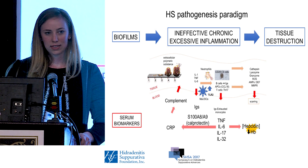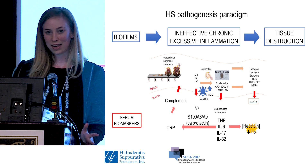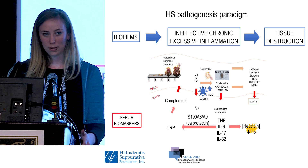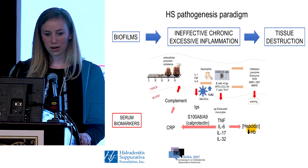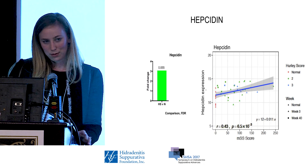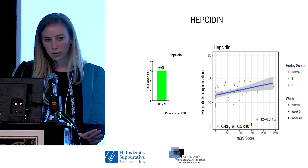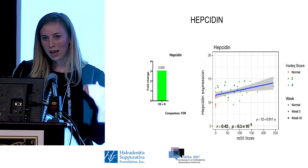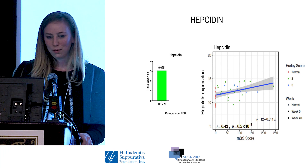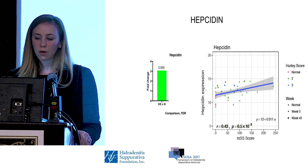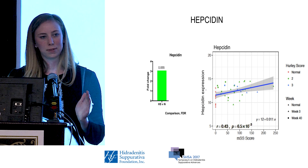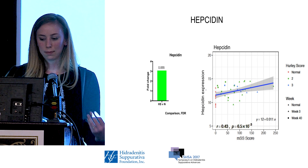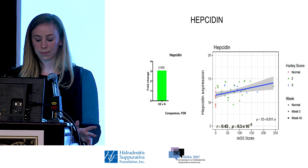The next biomarker is hepcidin, which is related to IL-6 because IL-6 stimulates hepcidin, and hepcidin is important in anemia of chronic disease. In our reanalysis, we found hepcidin had a three-fold increase compared to normal patients, just above our level of significance. When we plotted hepcidin against disease severity using the modified Sartorius score, we found that hepcidin correlated with more severe disease.